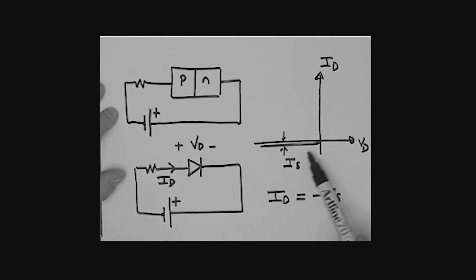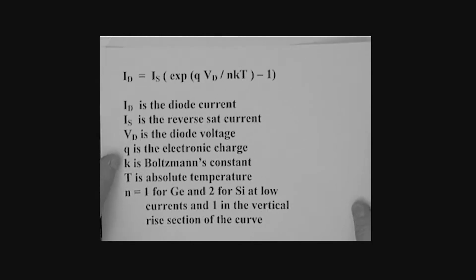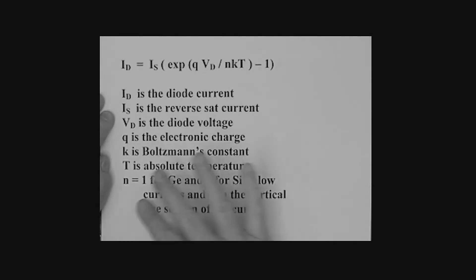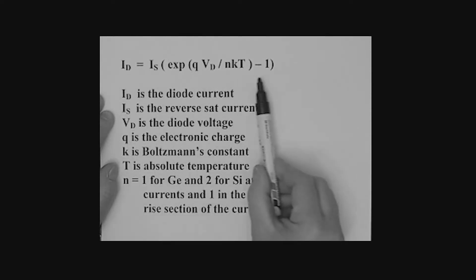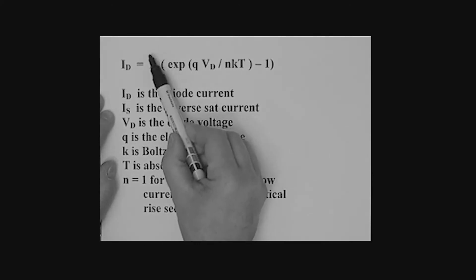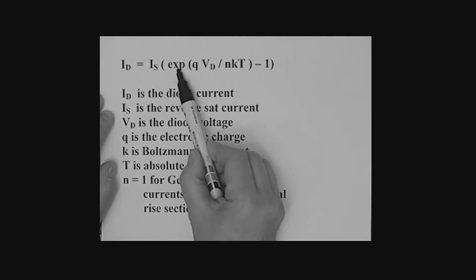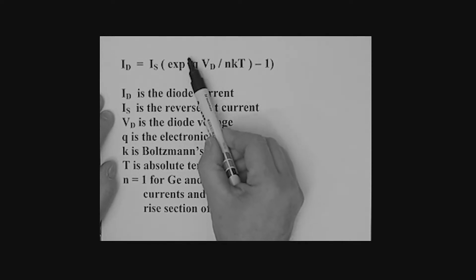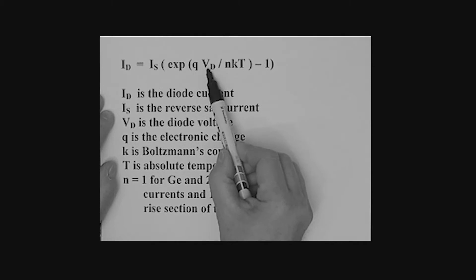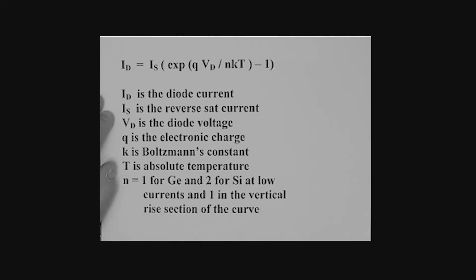There is an equation that describes this characteristic curve for this p-n junction diode. Let me show you that equation. I'm saying that ID is equal to IS, that's that reverse saturation current, opening up a big bracket. Inside these brackets, I have the exponential function. That exponential function is exponential of Q times the voltage across the diode divided by NKT, and then minus one.